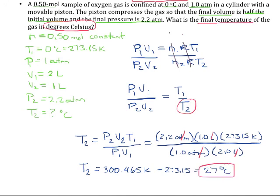I round to two significant figures because my given numbers have two significant figures. In these gas law problems you'll get a lot of information — the best thing you can do is organize all the information you know, work algebraically, rearrange your equation for the variable you're solving for, and plugging in numbers should be your last step. You just need a system to keep all this information straight.